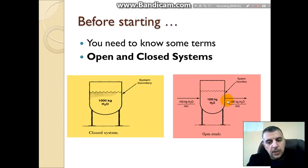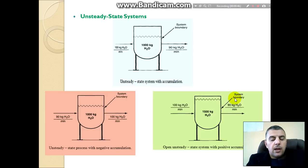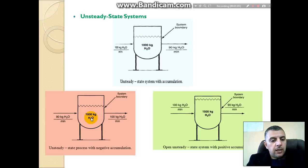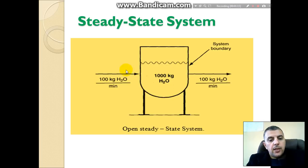In an open system, material crosses the system boundaries and leaves the system boundaries. Another important term is steady and unsteady processes. In an unsteady process, the amount of input does not equal the amount of material out, and there will be an accumulation inside the system. The accumulation may be negative, meaning there is a decrease with time, or positive when there is an increase with time.